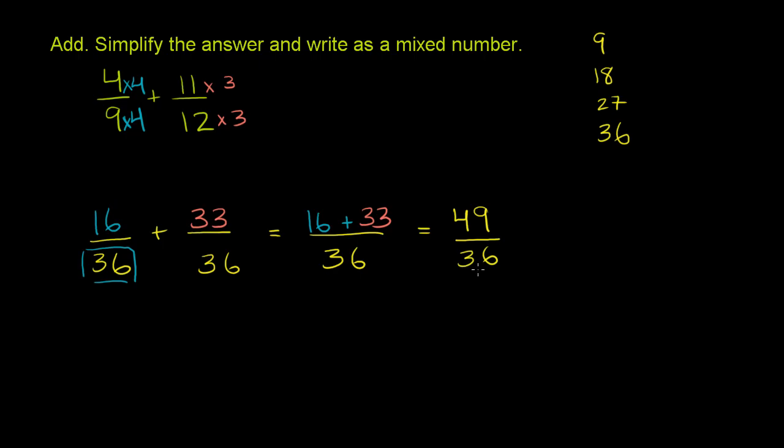To do that, we divide 36 into 49. 36 goes into 49 how many times? Well, it only goes one time. So it equals 1. And how much will be left over? 1 times 36 is 36. And I have 13 left over to get to 49. So it's 1 and 13/36.